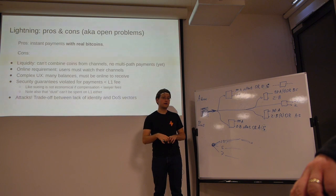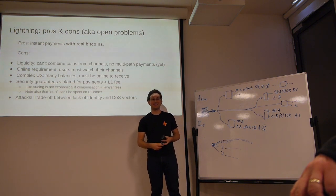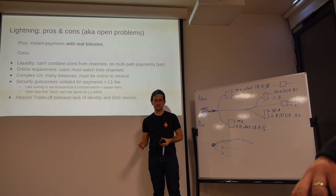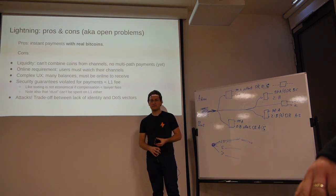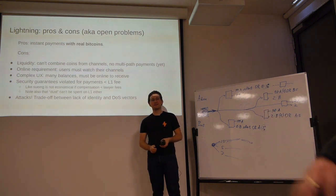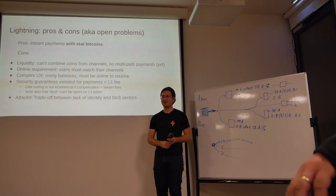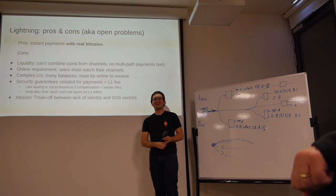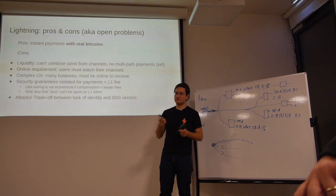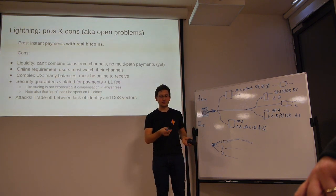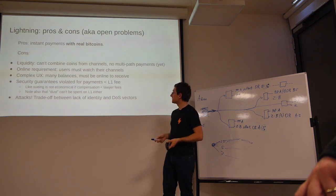Regarding channel factories: I know the concept exists but I'm not that familiar with it. My understanding is it's a multi-party channel where if you have many parties — 6, 8, 10 — you can create channels amongst those parties and open and close them without going back to chain. Online requirement is another drawback: users must watch the chain. If you don't want to watch it yourself, you can outsource, but then you must trust the server that's watching the chain for you. Complex UX is also a challenge — a Lightning wallet shows on-chain balance, channel balances, incoming balance, outgoing balance, what you can send and receive, and it's hard to understand.